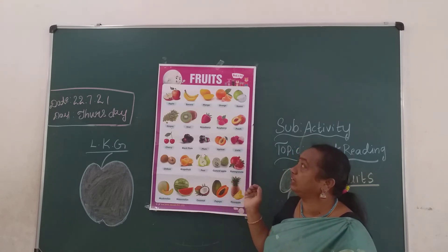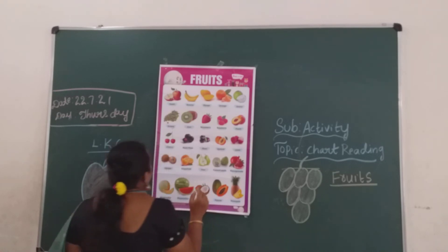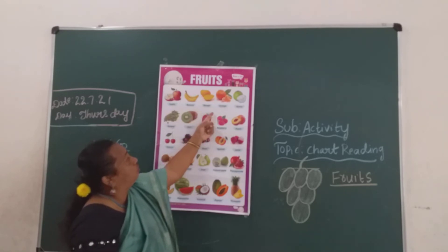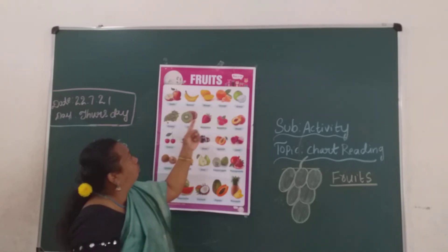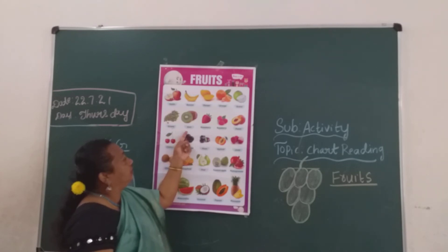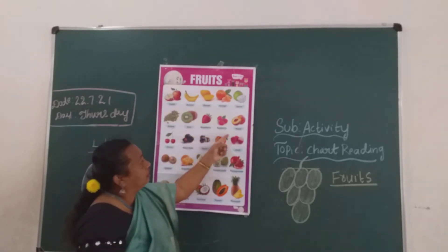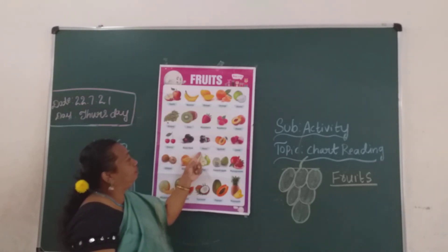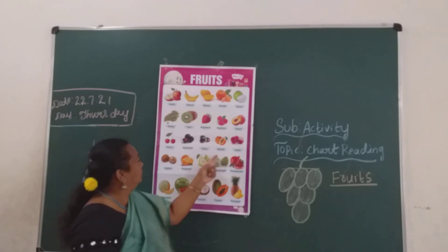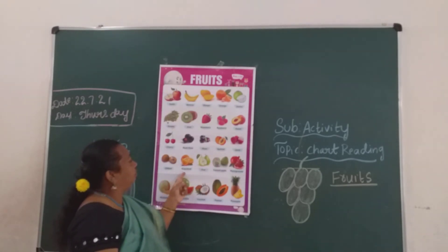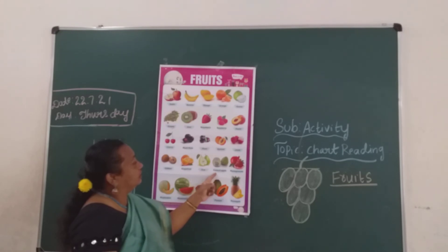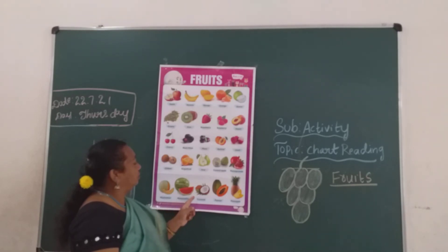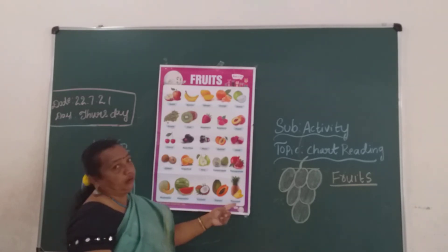Fruits. Which fruit is this? Apple. Which fruit? Apple, banana, mango, orange, grapes, kiwi, strawberry, raspberry, peach, cherry, black plum, plum, apricot, lychee, chiku, grapefruit, pear, custard apple, pomegranate, musk melon, watermelon, coconut, papaya, pineapple.